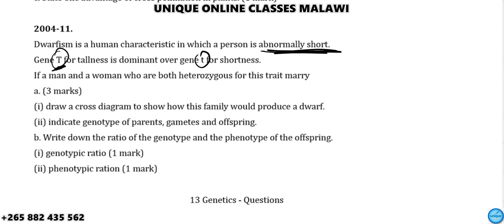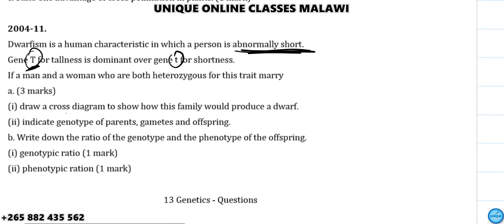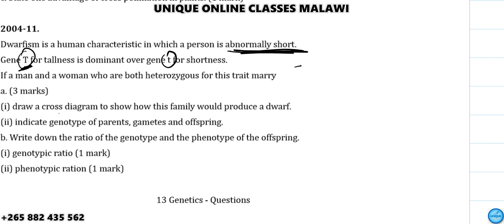If a man and a woman who are both carriers of this trait — draw the diagram to show how the family would produce offspring. We draw a cross diagram: the parents each carry one dominant and one recessive allele. The cross gives us one-one-two months — two on each level, indicating a standard Mendelian cross.